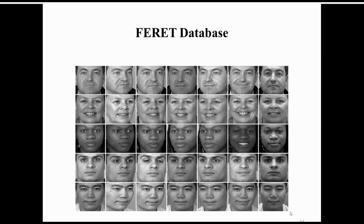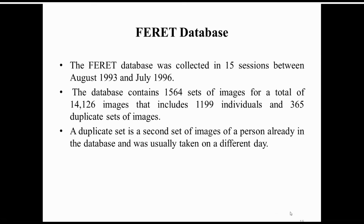The FERET database samples were collected over 40 to 15 sessions between August 1993 and July 1996. The database contains 1,564 sets of images for a total of 14,126 images, including 1,199 individuals and 365 duplicate sets of images. A duplicate set is a second set of images of a person already in the database, usually taken on a different day.